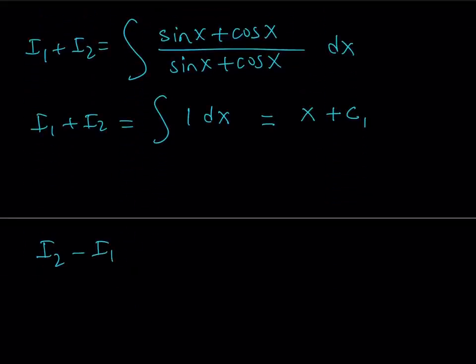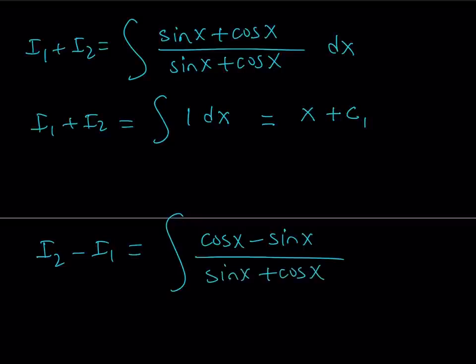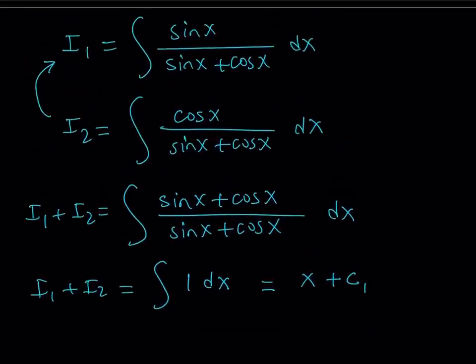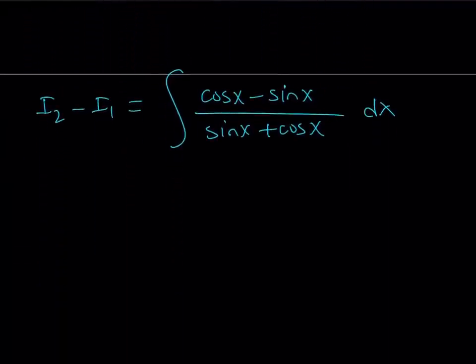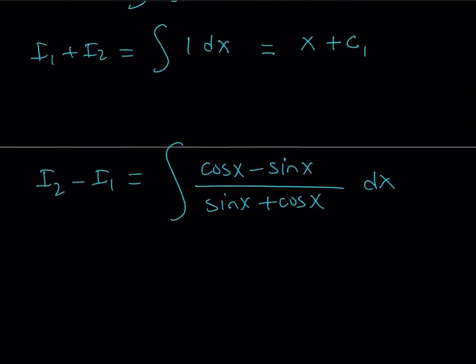And that is going to give us cosine x minus sine x over sine x plus cosine x dx. Because I can just subtract them. This is cosine x, I have a numerator. I have another numerator. And then I have a common denominator. So I can just go ahead and subtract them with the common denominator. So now I got I1 plus I2, and I got I2 minus I1. So hopefully by solving this as a system, I can find I1 from here.